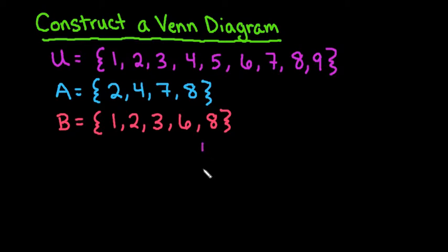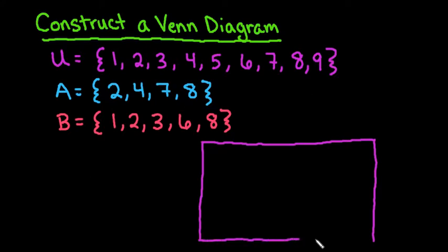So whenever you construct a Venn diagram the first thing that you're going to do is draw a large rectangle and in that large rectangle the rectangle itself represents the universal set. So this is my universal set U and then I'm going to draw a circle to represent both of the sets.